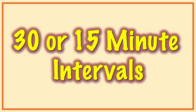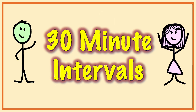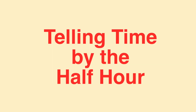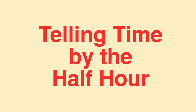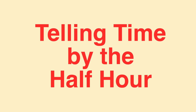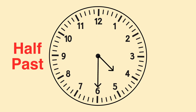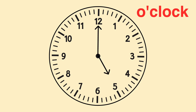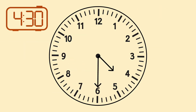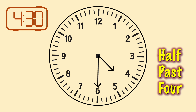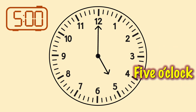Two easy ways to tell time on an analog clock are by 30 minute intervals and 15 minute intervals. Telling time by 30 minute intervals is called telling time by the half hour. When we tell time by the half hour, the time is either 30 minutes after or a new hour. Another way to say that is half past or an o'clock — like this: 4:30 is half past 4, and 5:00 is 5 o'clock.